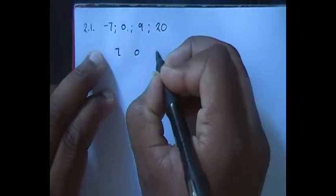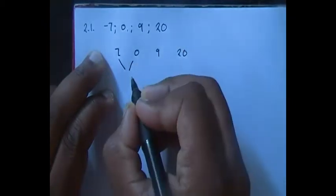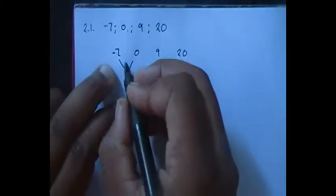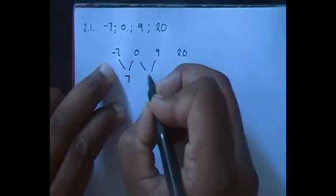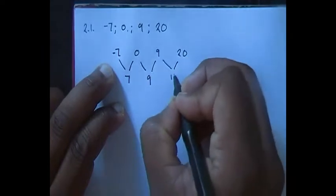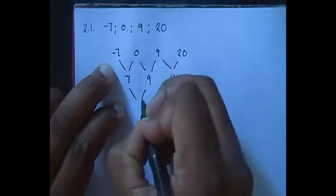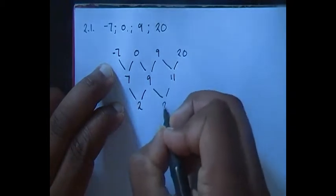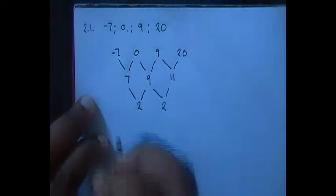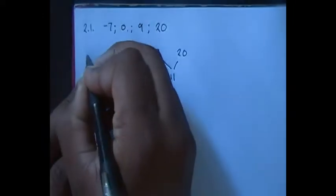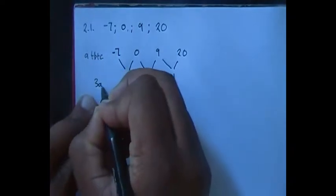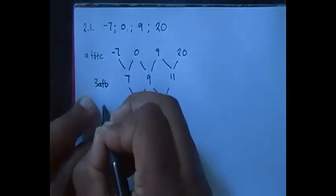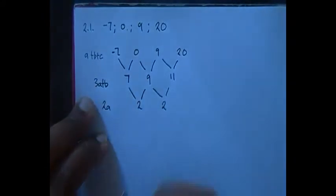So we have negative 7, 0, 9, 20. The first differences are: we add 7, we add 9, we add 11. So that means our second common difference is 2. Remember that formula: the first level is A plus B plus C, the second level is 3A plus B, and the third level is 2A. Always remember that formula.